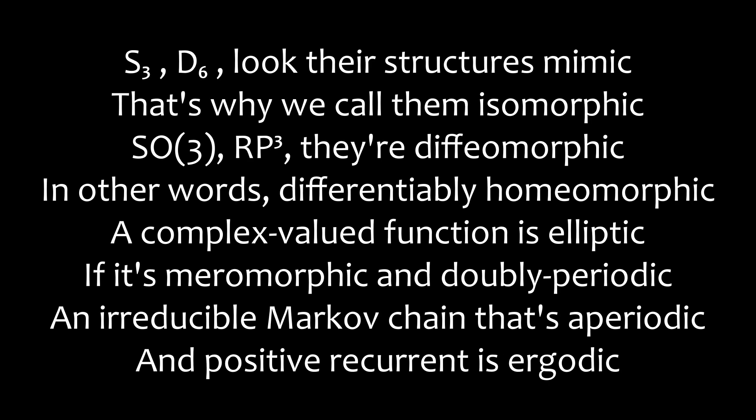S3, D6 — their structures mimic. That's why we call them isomorphic. SO3, RP3 — that's diffeomorphic. In other words, differentially homeomorphic.